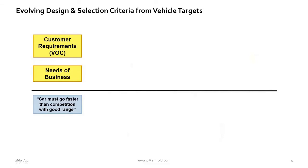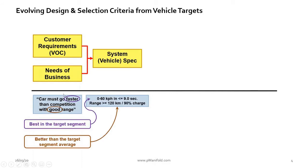Starting from vehicle requirements, the marketing or customer language is not technical — you won't get numbers. What you get are statements like 'the car must go faster than the competition and with good range.' Words like 'faster than the competition' or 'better than the competition' means we are targeting to be best in segment, whereas 'good enough' or 'average' means you want to be around the segment average for that attribute. In this case, we want to be best in class for performance and better than average for range.